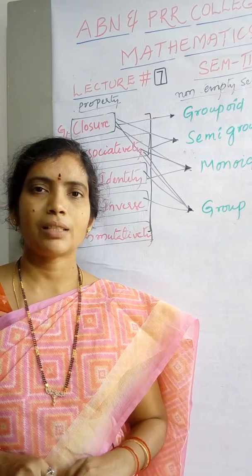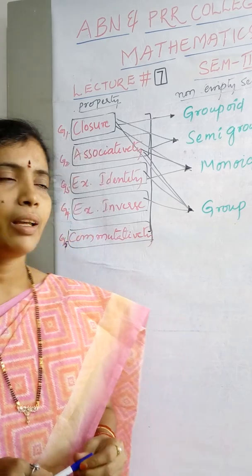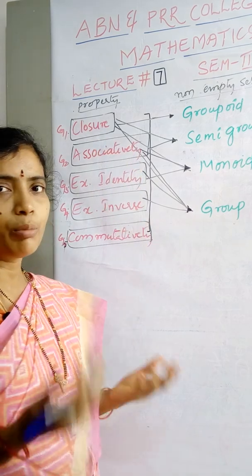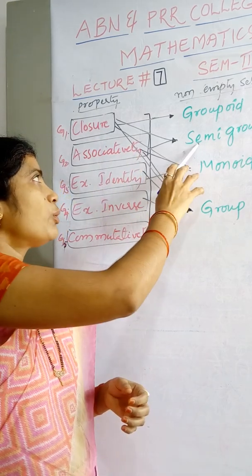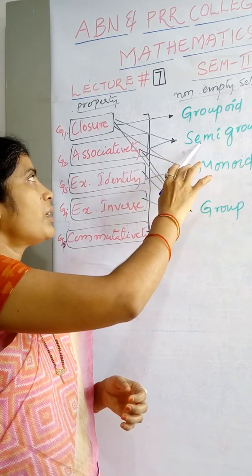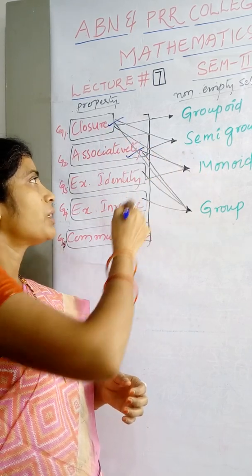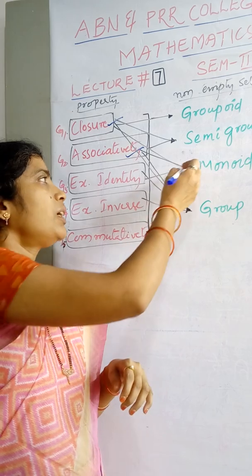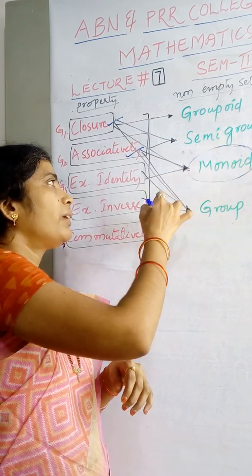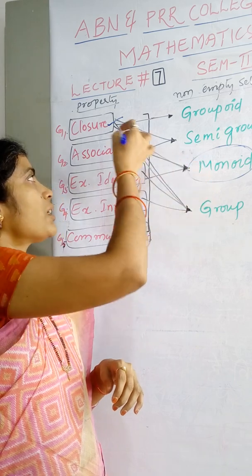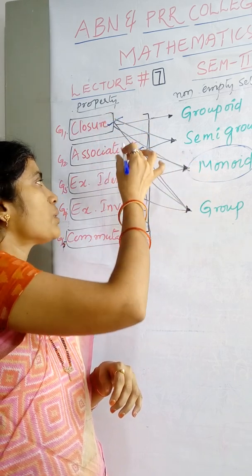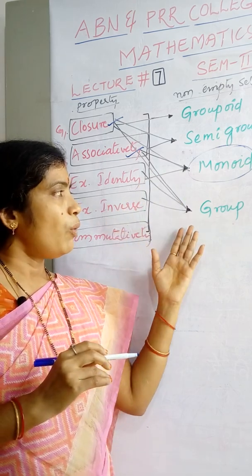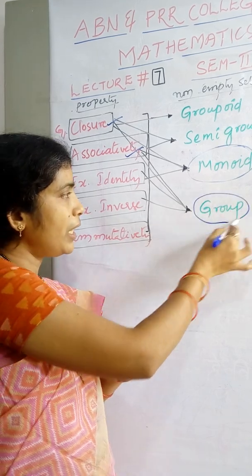Good morning. In the last class we discussed about special sets. A groupoid is a set satisfying closure property under any composition. A semi-group is a non-empty set satisfying closure property and associativity. A monoid is a non-empty set satisfying three properties: closure property, associativity, and existence of identity.